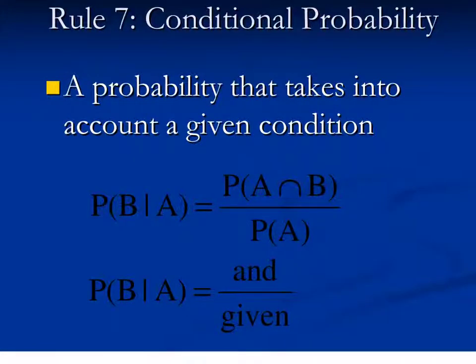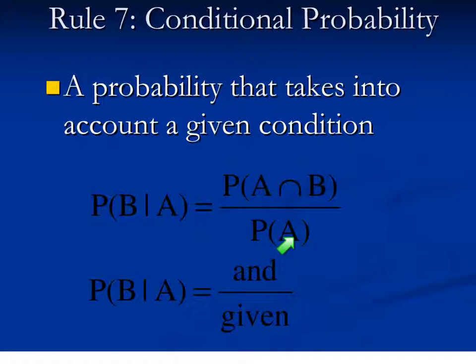This will be the fourth video in our unit on probability, and we'll start off with our last probability rule that we need to discuss, which is conditional probability. That's a probability that takes into account a given condition. We read this as the probability of event B given event A, and to do that we use this formula: we take the probability of event A and event B, and divide it by the probability of the event that we are given.